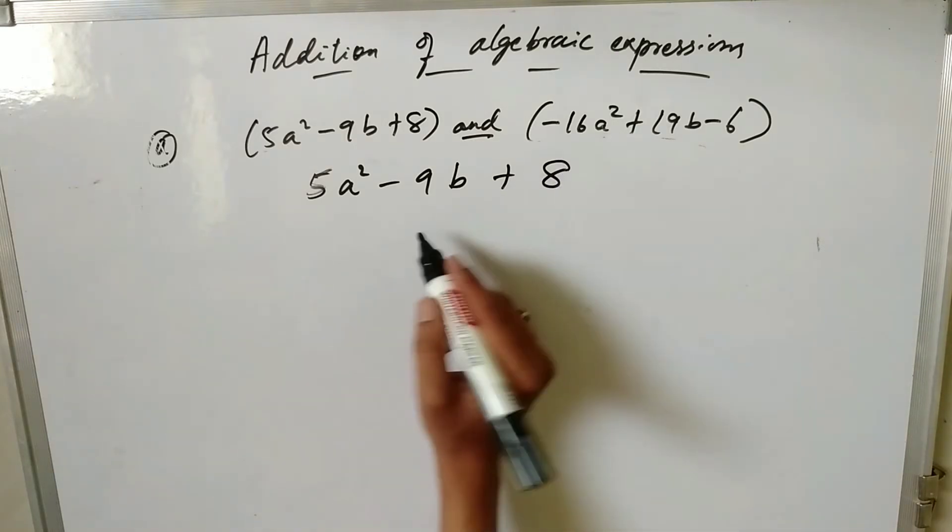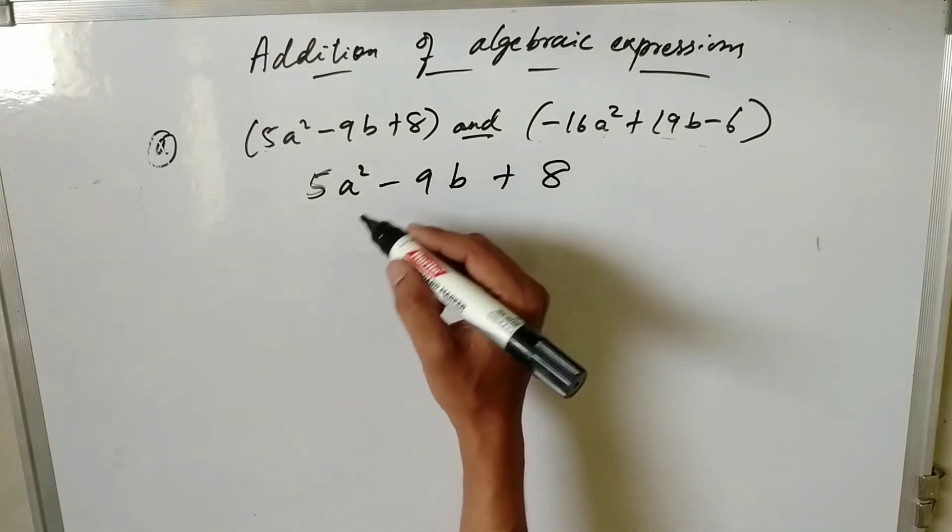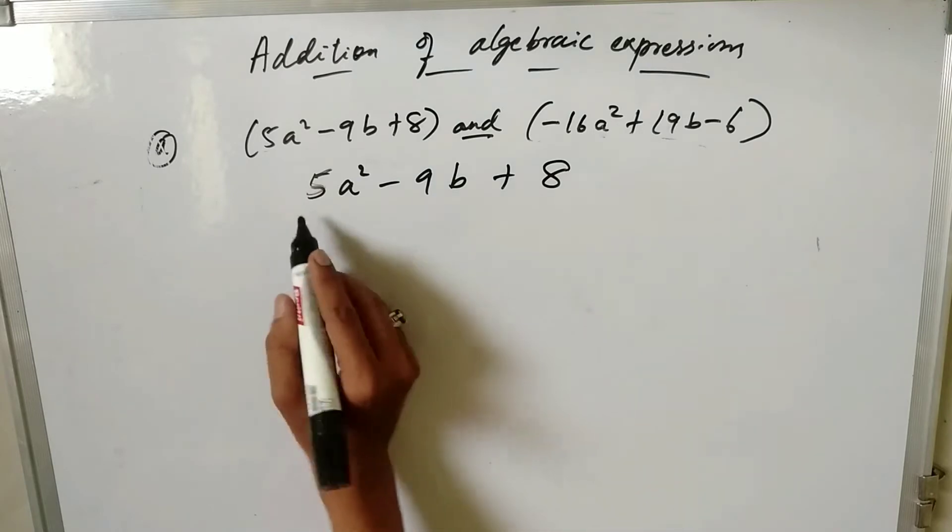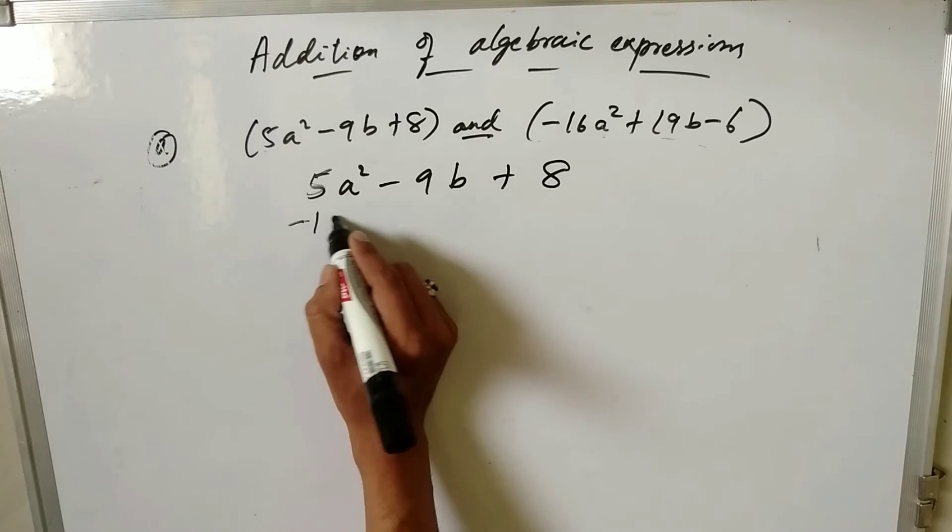So -16a². You need to write the like terms below the same term. This is 5a², the like term is -16a², so you have to write -16a² below this 5a².